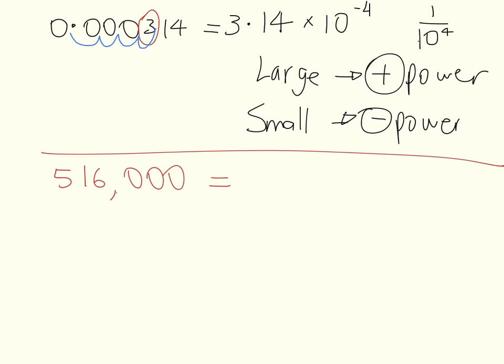Now what if I've got something like this? 516,000, well I would say 5.16 times 10 to the power of 1, 2, 3, 4, 5, 10 to the power of 5.